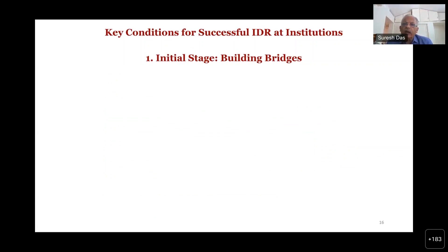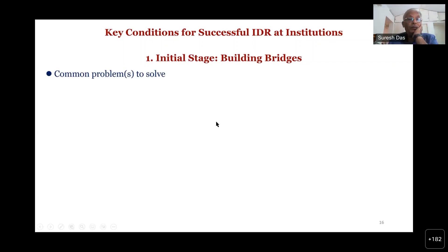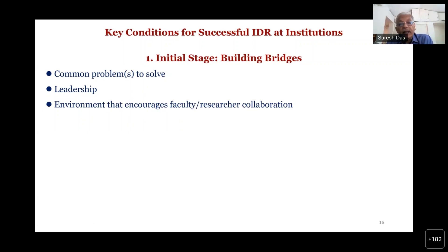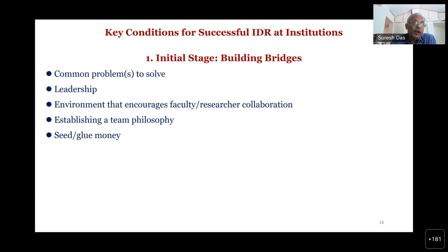Let us look at the key conditions required for interdisciplinary research, because it doesn't happen automatically. The first and most important stage is building bridges between people. Leadership must have not just technical skills but also emotional intelligence and conflict resolution abilities. There must be an environment that encourages faculty and researchers to collaborate and establish a team philosophy. Funding that attracts different groups to come together around a common problem is essential.